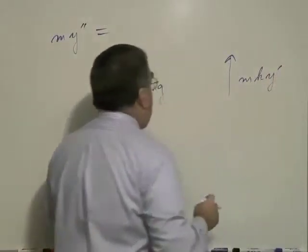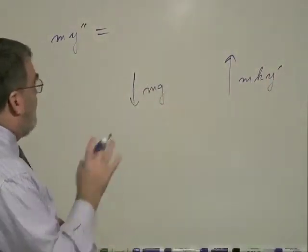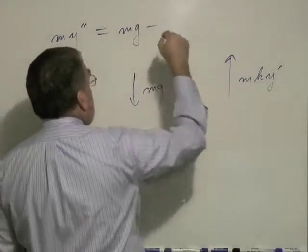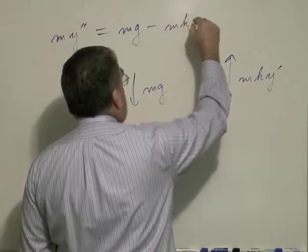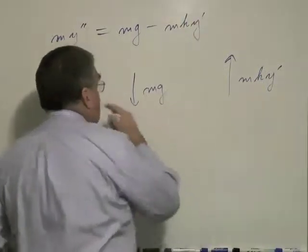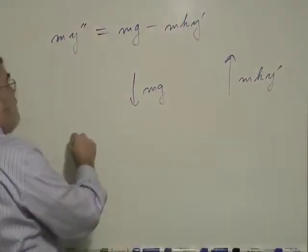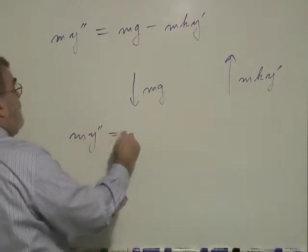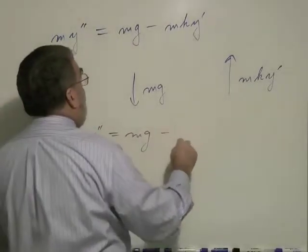If you work it out the way I've listed it, it's mg minus mk y prime. Now, I think our textbook, if I remember right, maybe not, some books might write it this way.